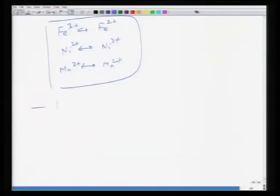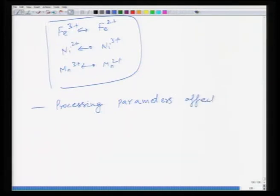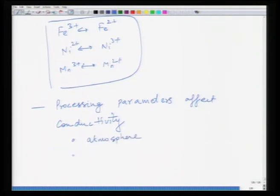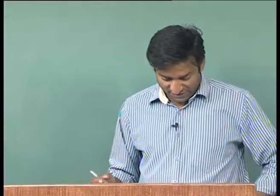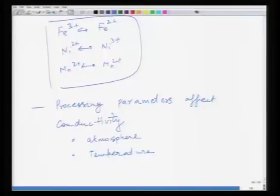However, you can change the conductivity of these materials by careful processing. Depending on parameters like atmosphere and temperature, these give rise to changes in the microstructure and composition of the material, leading to changes in conductivity. If you use an atmosphere which allows reduction of Fe³⁺ to Fe²⁺, or conversely one which promotes oxidation of Fe²⁺ to Fe³⁺, you can control the resistivity of these materials.